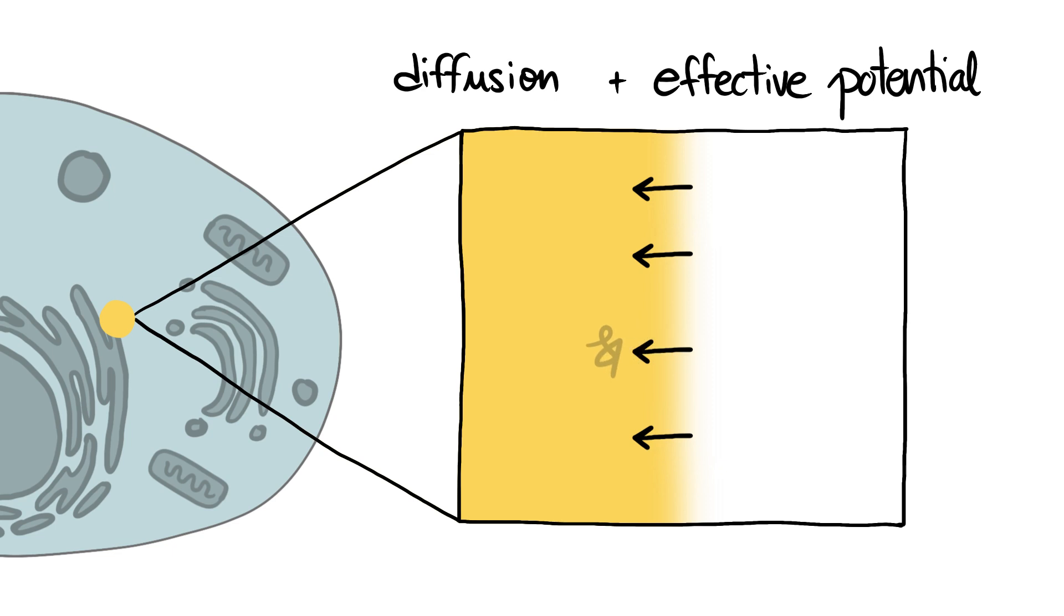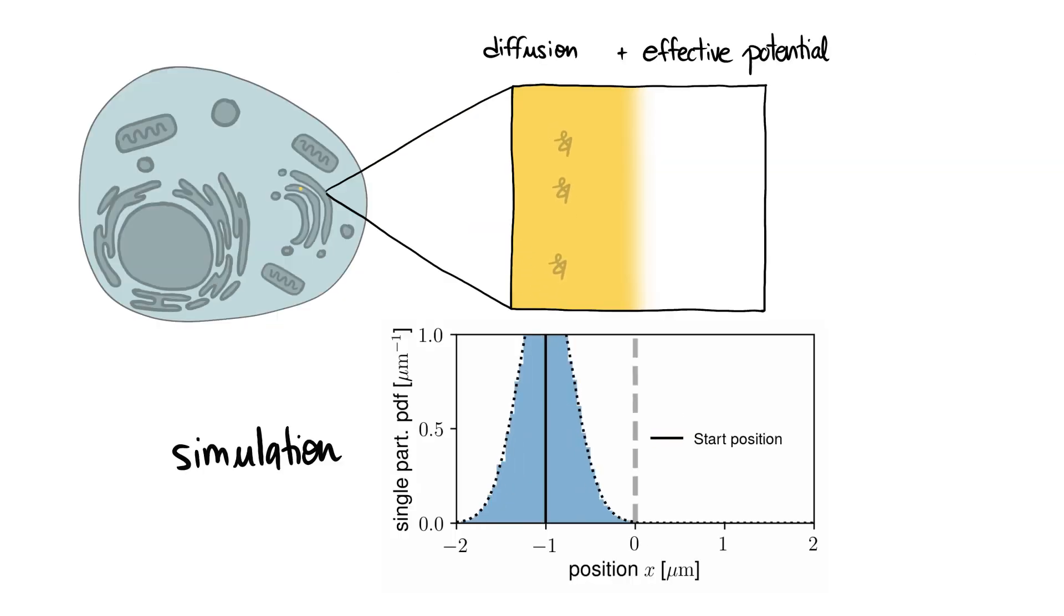This force makes the interface boundary partially reflecting for the molecules that are trying to leave the droplet. So, some molecules can cross the boundary, while others bounce back and remain inside.